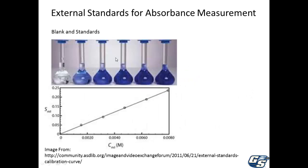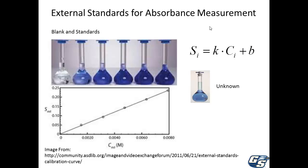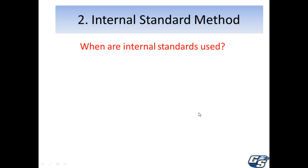You have a set of standards including a blank, with varying amounts of analyte. Signals are recorded — probably absorbance measurements — where absorbance is directly proportional to the analyte concentration. You also measure the absorbance of the unknown solution. Then you rearrange the equation and plug that absorbance of the unknown in to solve for the unknown concentration.